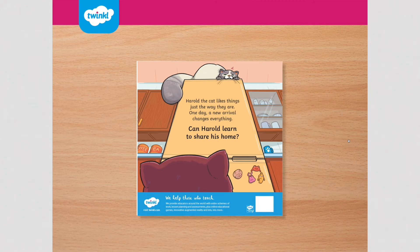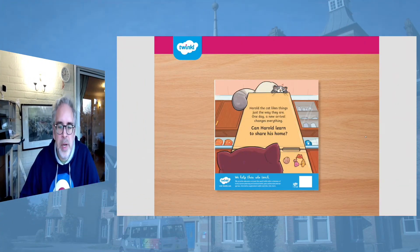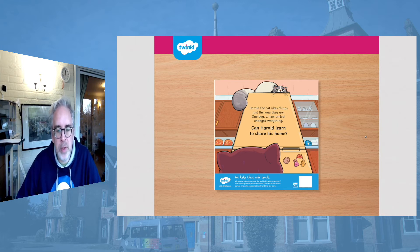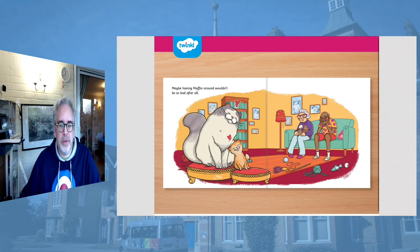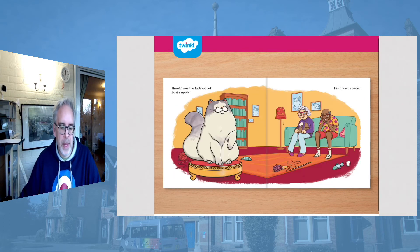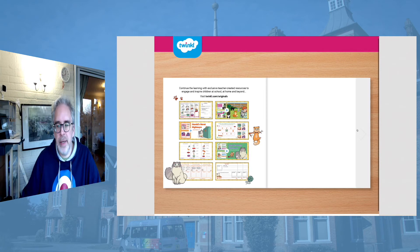If we have a little look at the blurb on the back of the book, we can see it says: Harold the cat likes things just the way they are. One day a new arrival changes everything. Can Harold learn to share his home? What do you think — do we think that Harold learned to share his home? What we're going to do is go back through the book and have a read again.